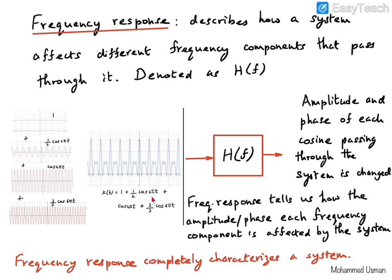When we apply the signal x(t) through a system, it is equivalent to applying each of these individual frequency components to the system. The system may affect the amplitudes and phases of each of these frequencies in a different way. The frequency response H(f) of the system tells us how the amplitude and phase of each cosine wave component of the signal x(t) has been altered by the system as they passed through it.